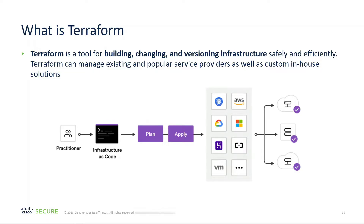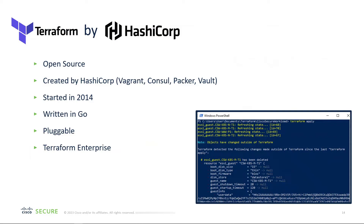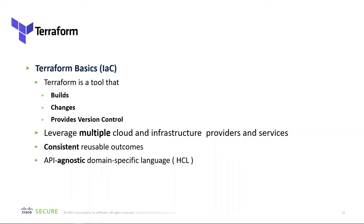Terraform was created by HashiCorp back in 2014. It's open source, written in Go, pluggable, and they have a commercial product called Terraform Enterprise. Terraform basics include the ability to build, change, and provide version control. You can leverage multiple cloud and infrastructure providers — deploying and delivering in AWS, Azure, or on-premise VMware. It has consistent reusable outcomes and is API agnostic.